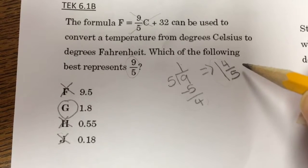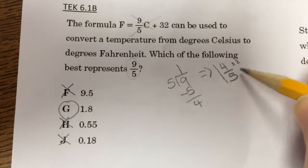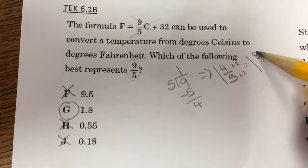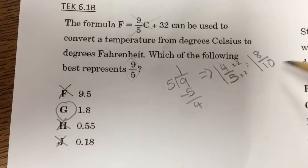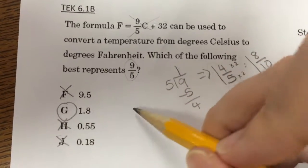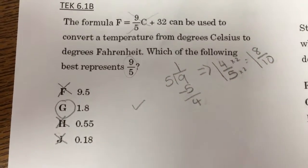I can double check by multiplying my top and bottom numbers by 2. 1, 4 times 2 is 8, 5 times 2 is 10, and I get 1 and 8 tenths. So I'm good to go.